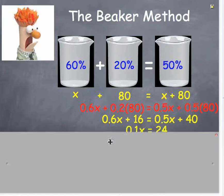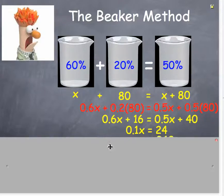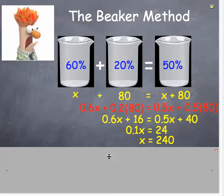Now to solve this problem, we just move the 0.5x to the left side by subtracting it. Move the 16 to the right side by subtracting it. We get 0.1x equals 24. Divide both sides by 0.1 and we get 240.